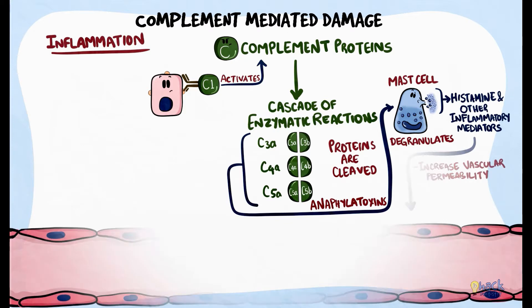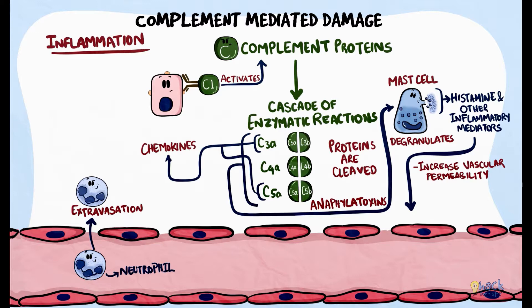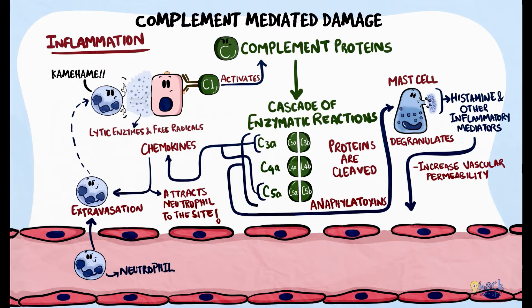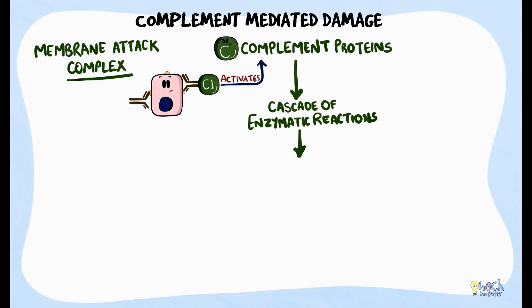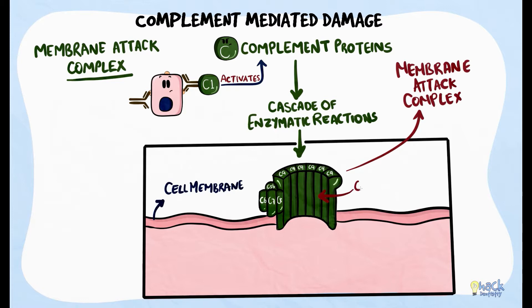The inflammatory mediators increase vascular permeability and help in extravasation of leukocytes like neutrophils. The complement cleaved products C3a and C5a are also chemotactic factors that attract neutrophils. Once recruited to the site, neutrophils are activated with their FC receptors recognizing the FC portion of the antibody. Activated neutrophils release lytic enzymes and free radicals, causing cell death. The complement cascade finally leads to complement proteins assembling into a membrane attack complex, which attaches to the cell membrane, creates channels on the cell surface, and causes an osmotic imbalance, eventually leading to cell lysis.